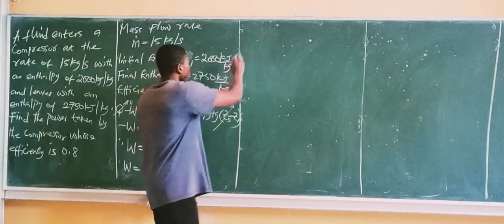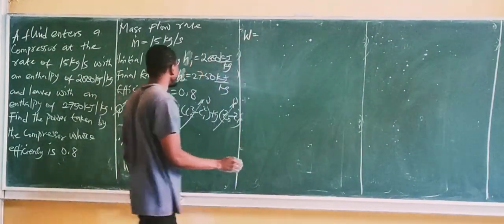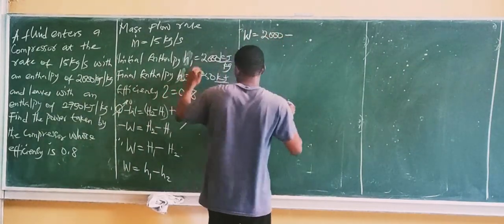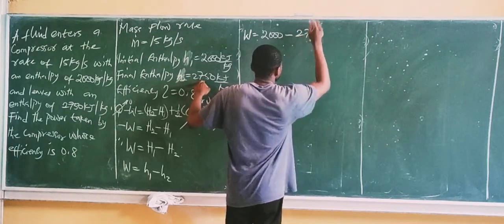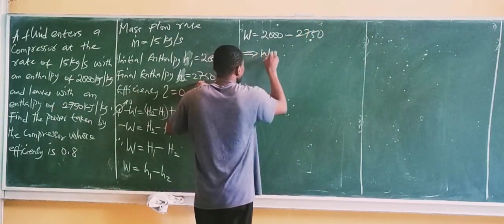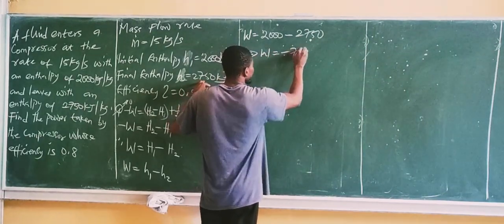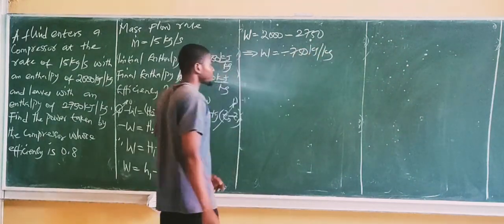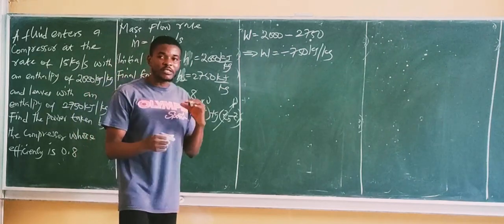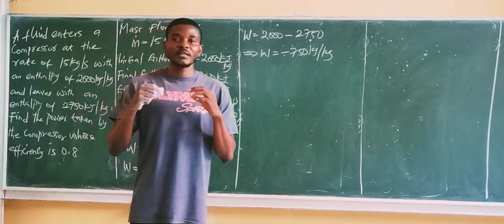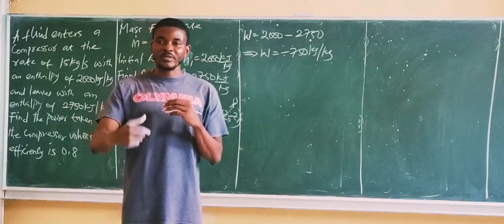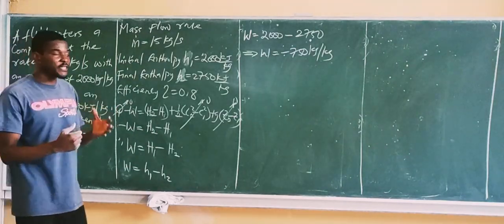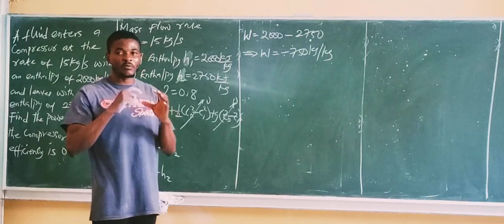Let's calculate now. Work done equals H1 minus H2. H1 is given as 2,000 kJ/kg and H2 is given as 2,750 kJ/kg. That gives us work done equals 2,000 minus 2,750, which is minus 750 kJ per kg. The negative sign confirms that the device is a compressor, which matches the problem statement.